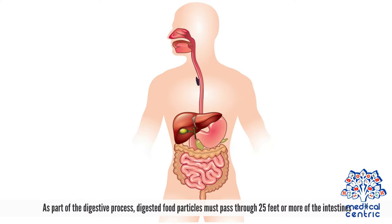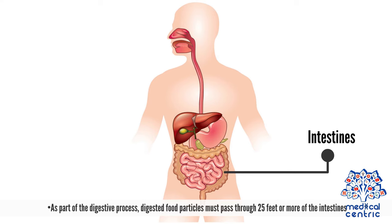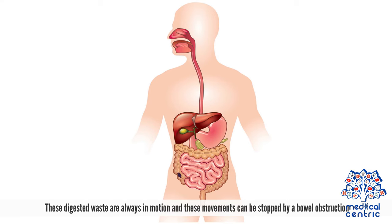As part of the digestive process, digested food particles must pass through 25 feet or more of the intestines. These digested waste are always in motion, and these movements can be stopped by a bowel obstruction.